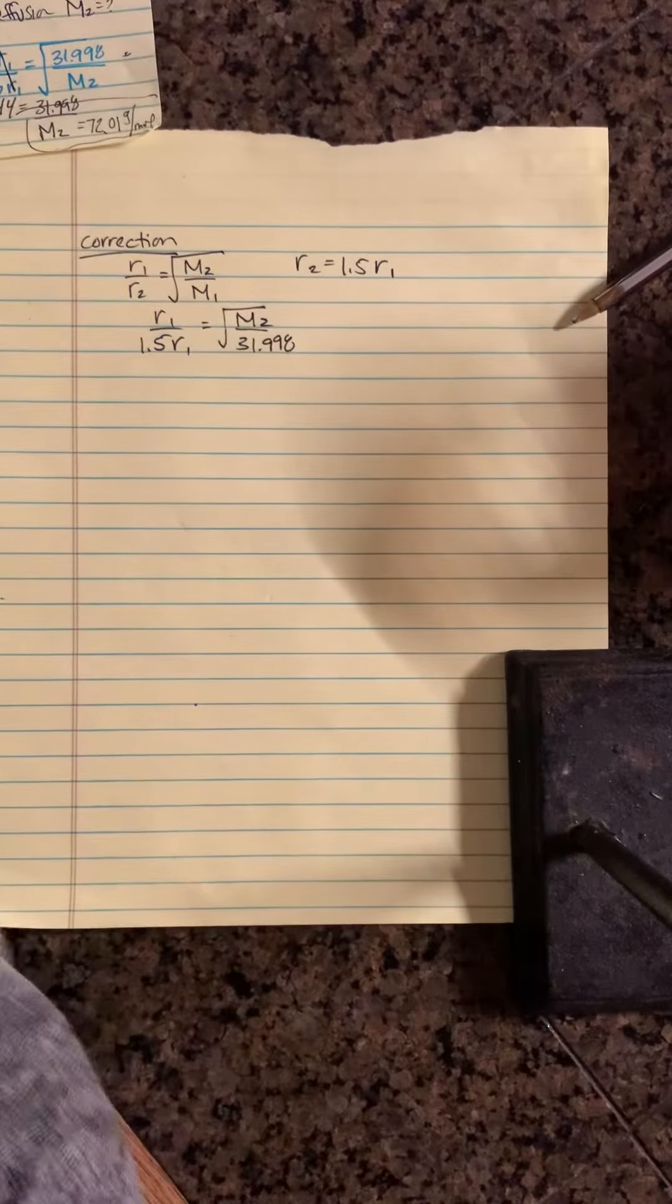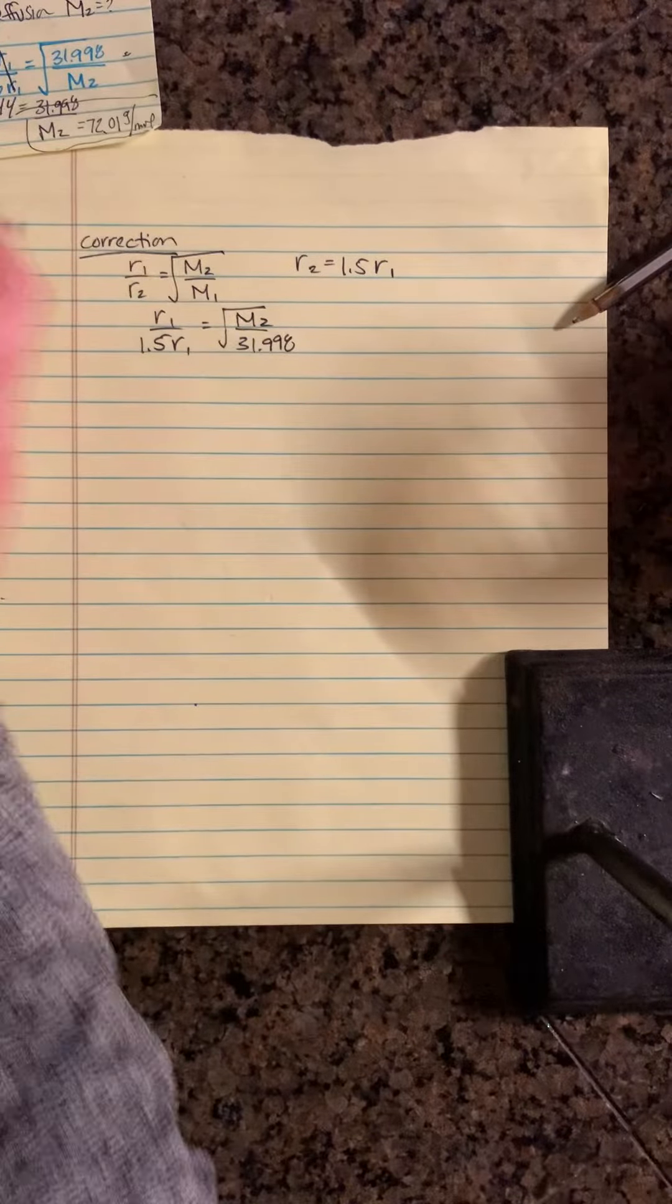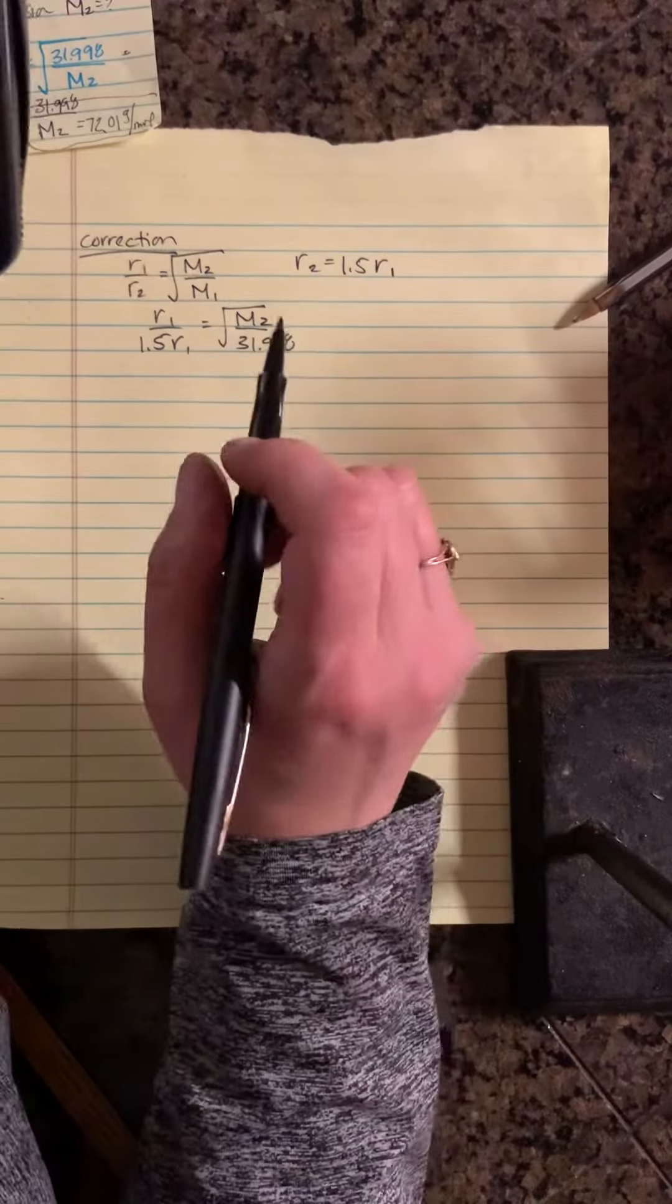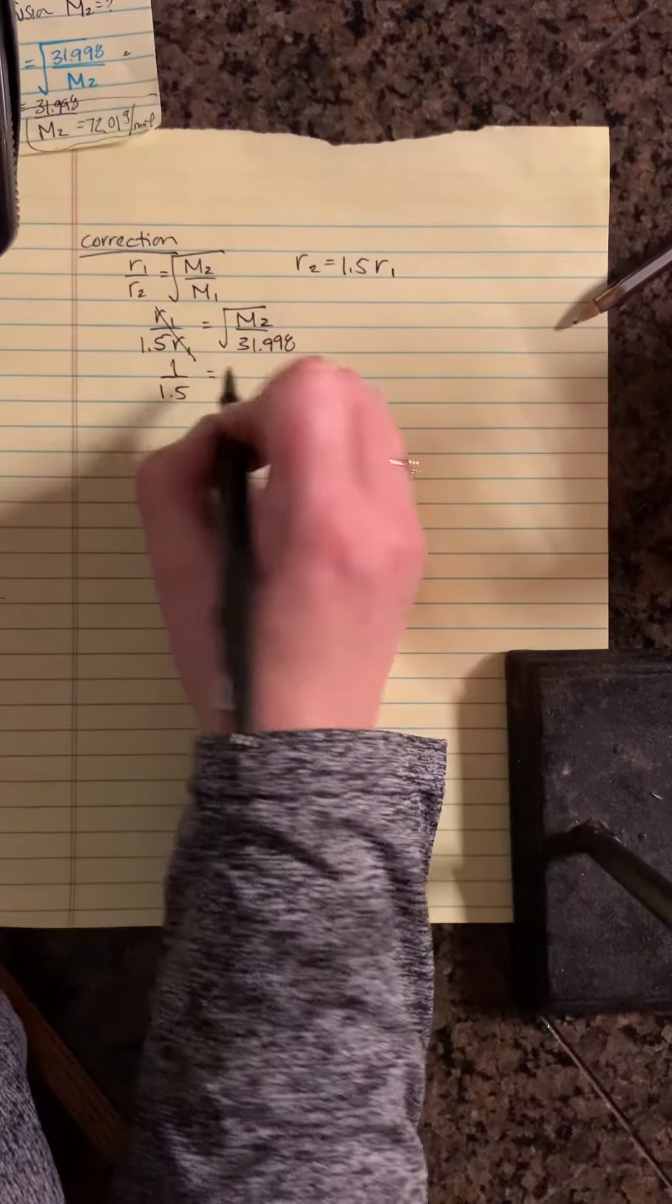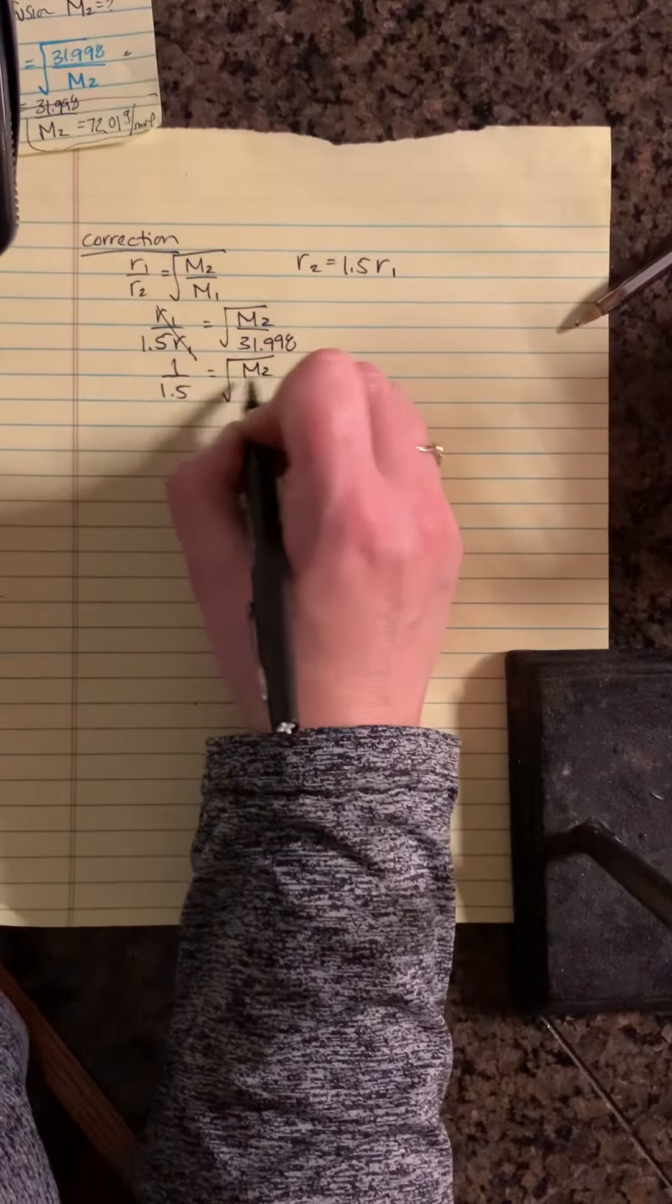So I couldn't figure out why that was coming out bigger, so I just substituted backwards. We're still going to cancel this. We're going to get 1 over 1.5 equals the square root of M2, our unknown,